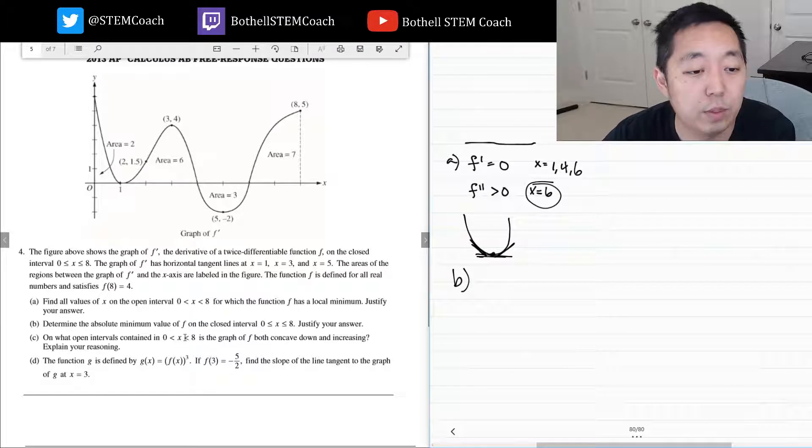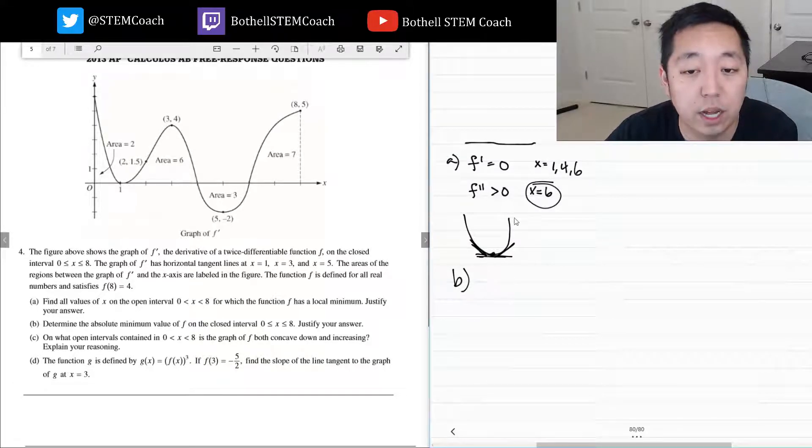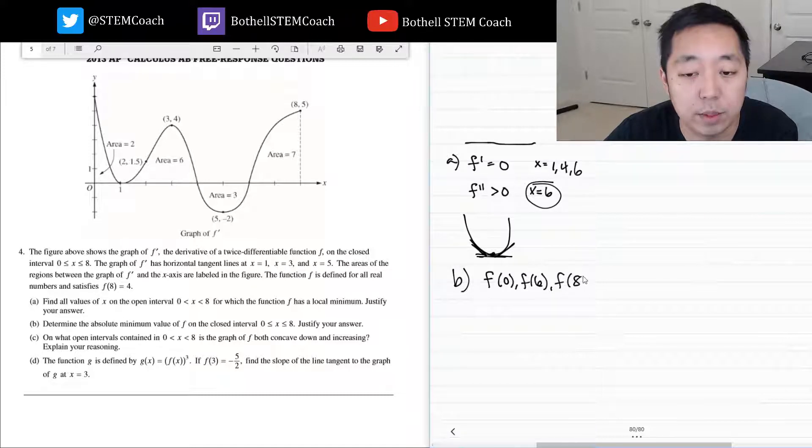Determine the absolute minimum value of f on the closed interval. Justify your answer. It's either at a local minimum or the endpoint, so we need to look at f of 0, f of 6, and f of 8, and compare those values. F of 8 is what's given to us initially. They tell us that's 4.